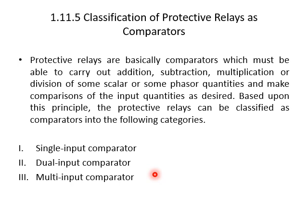An example is the overcurrent relay, which measures the current of a circuit and compares it with a certain preset reference value. In a system with a relay, there is a preset limit of current — say 5 amperes; if the current crosses that limit, the overcurrent relay operates. A drawback of single input comparators is that they are non-directional and not fully reliable, because their action depends upon a single quantity, causing them to fail to attain reliability.